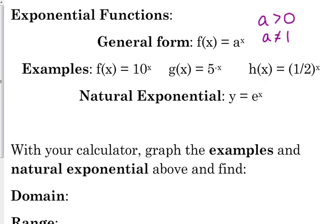As I mentioned, those are some generic examples. You can have a negative with the x. You can have stuff added and subtracted in the exponent. You'll look at a few of those things, and then the natural exponential is a special exponential function. E looks like a variable, but it is actually a number.